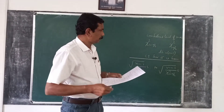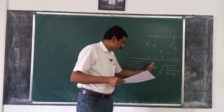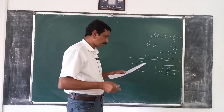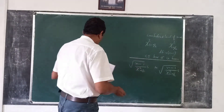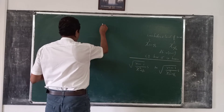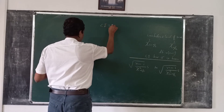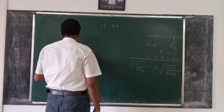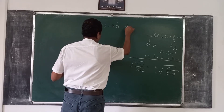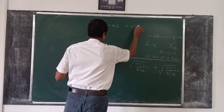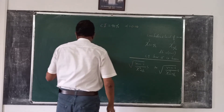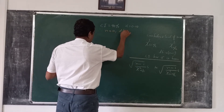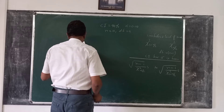Now before explaining how these confidence intervals are actually derived, let us consider an example. Suppose that we construct a confidence interval of 90 percent, that is alpha is equal to 0.100, n is equal to 10, and degrees of freedom is equal to 9.